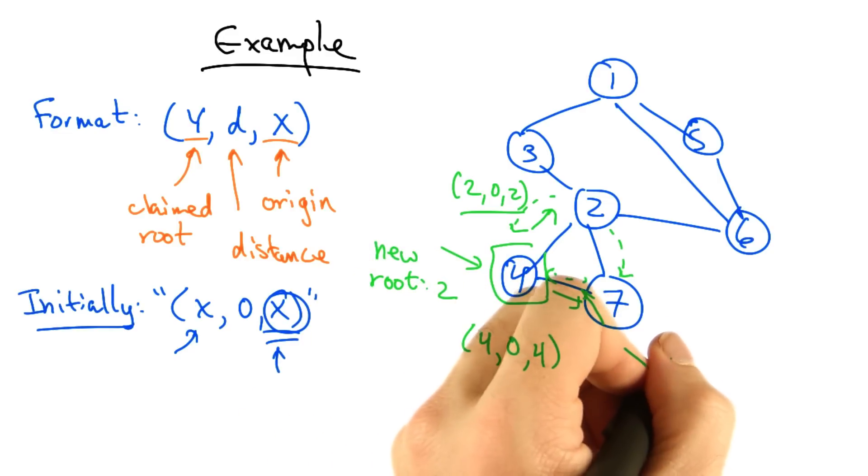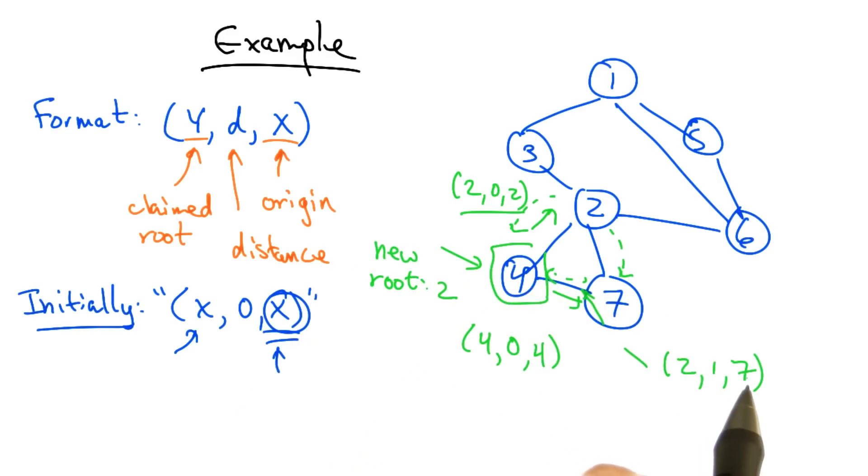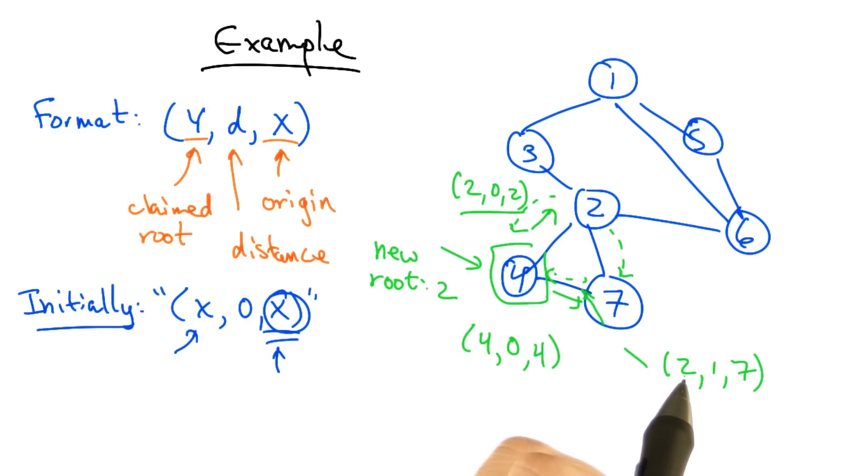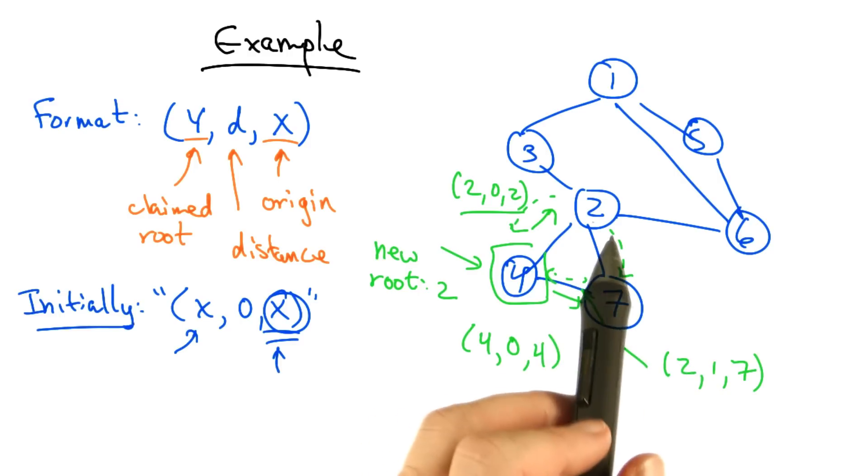Eventually, node 4 will also hear a message 2, 1, 7 from node 7, indicating that node 7 thinks it is one hop away from its view of the root, which is node 2. It will realize that the path through node 7 is a longer path to the root and will remove the link 4, 7 from the tree. We can repeat this process and ultimately end up with a spanning tree.